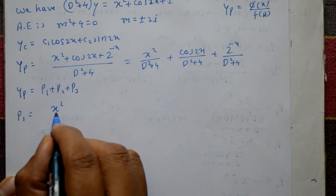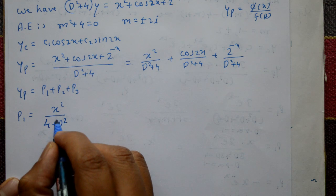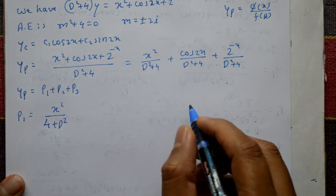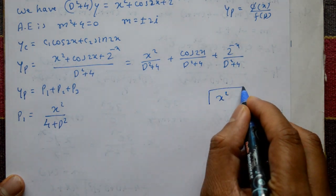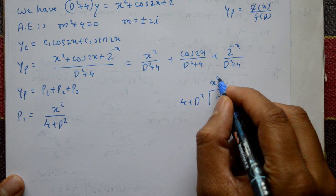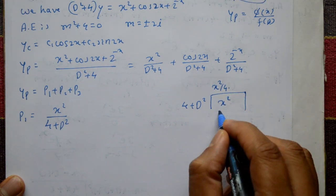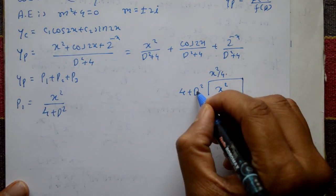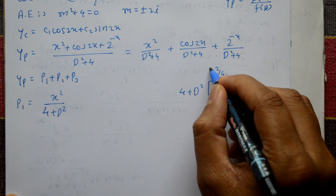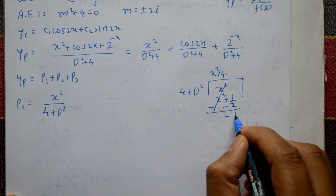Solve P1 = x² / (D² + 4). Write as x² / (4 + D²), with the constant term first and D in increasing order. Using the division method: divide x² by (4 + D²). First term: x²/4. Multiply 4 by x²/4 gives x², cancel. Differentiate x² twice: 2x, then 2. So 2/4 = 1/2.